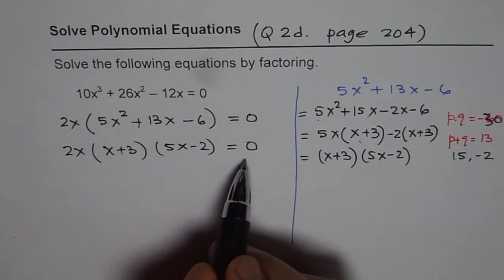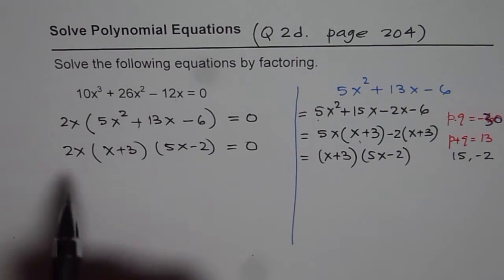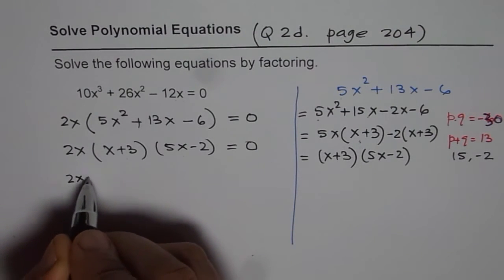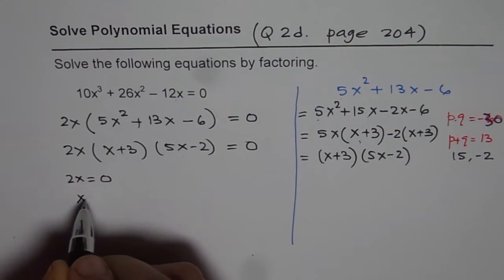So, now, when we have it in factored form, you can write down the solution. Each factor will give us a solution. So, first solution is, when 2x equals to 0, that gives us x equals to 0.